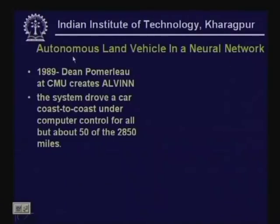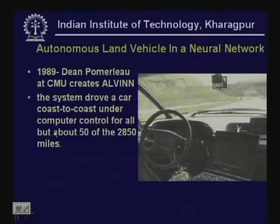ALVINN, which stands for Autonomous Land Vehicle In a Neural Network, was designed in 1989 by Dean Pomerleau at Carnegie Mellon University. This system drove a car from the east coast to the west coast across the United States using computer control, driving completely autonomously for most of the 2,850 miles. Only for 50 miles, especially at freeway exits, did the human driver take charge.